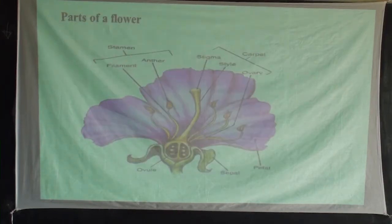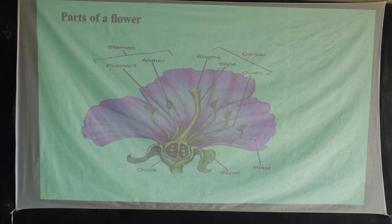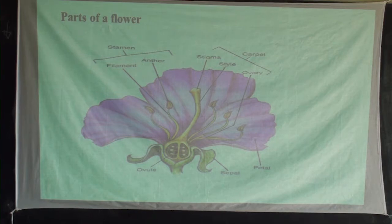Looking at the parts of a flower — this gives us a clear view of how they reproduce. We will look at the male part and the female part of a flower. Majorly, looking at the flower, we can classify it in three parts: the external parts.